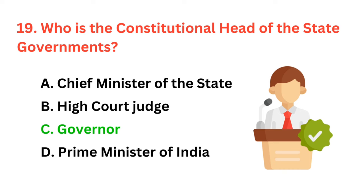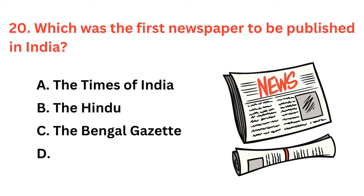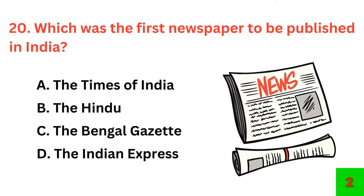Which was the first newspaper to be published in India? The correct answer is option C: The Bengal Gazette.